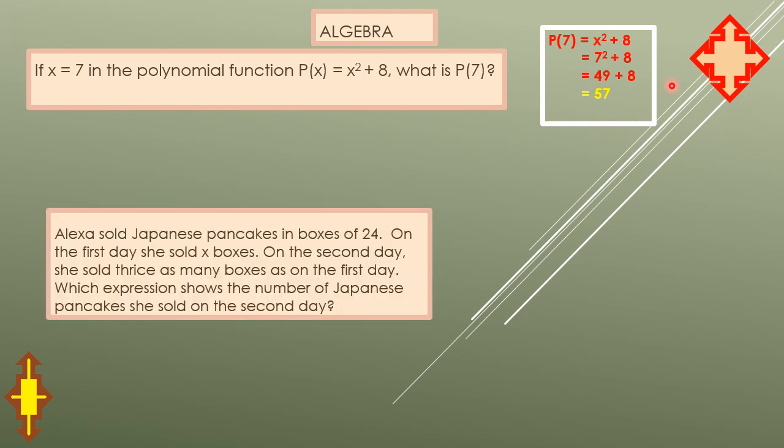Another problem: Alexa sold Japanese pancakes in boxes of 24. On the first day she sold x boxes. On the second day she sold three times as many boxes as on the first day. Remember, the first day was x. Which expression shows the number of Japanese pancakes she sold on the second day? The first day sale was x. On the second day it was three times as many, so just multiply. The second day sale is 24 times 3x. Why 24? Because each box contains 24 pancakes. Why 3? Because it's three times as many boxes as on the first day, that's x.